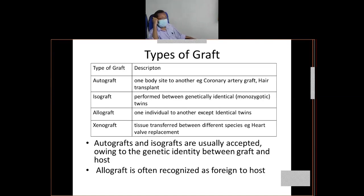Sometimes it can be an isograft. Isograft means they are not from a single individual, but genetically they should be similar. That is only possible when there are monozygotic twins. Even dizygotic twins will not come under isograft — dizygotic twins are different individuals. Monozygotic twins are genetically a single individual.